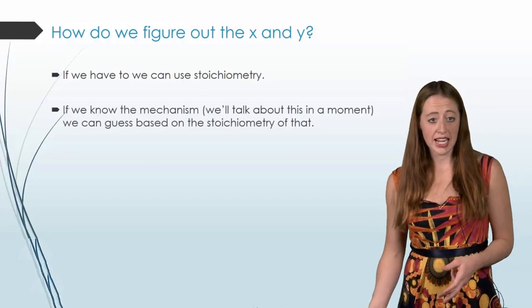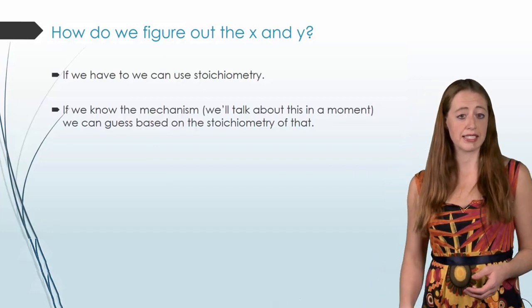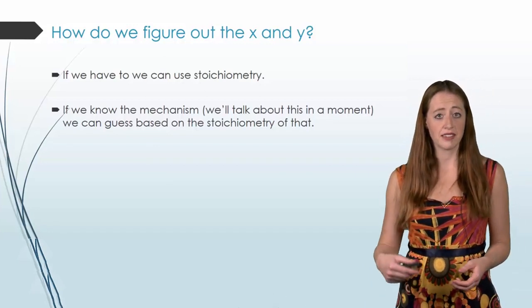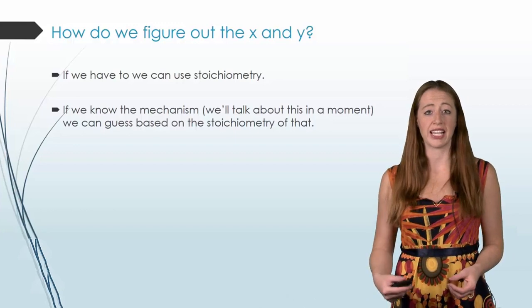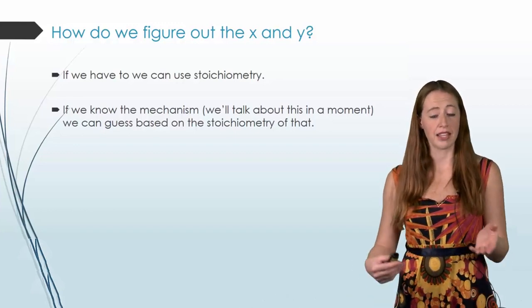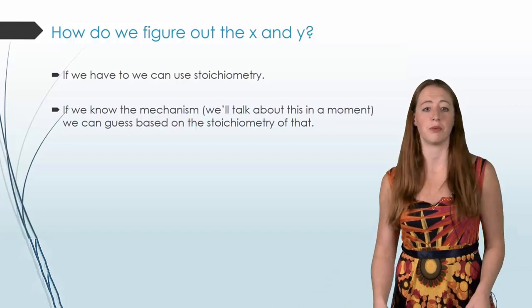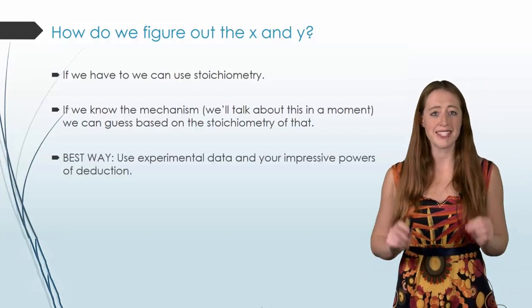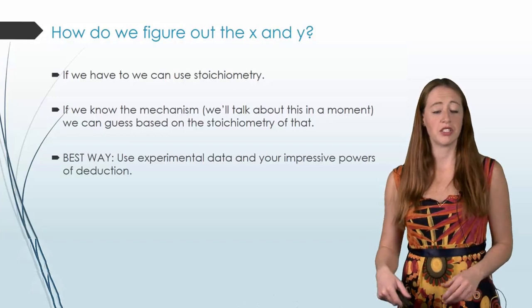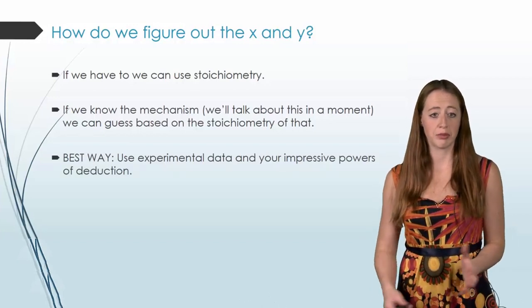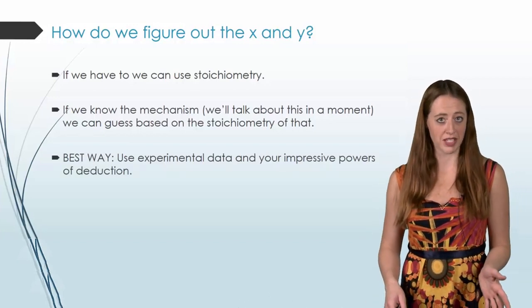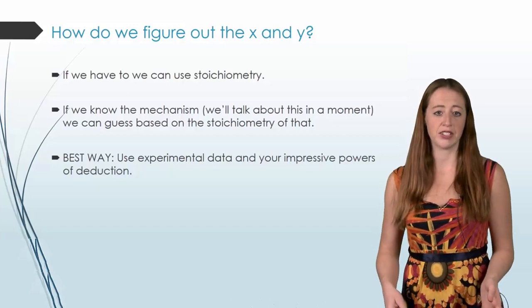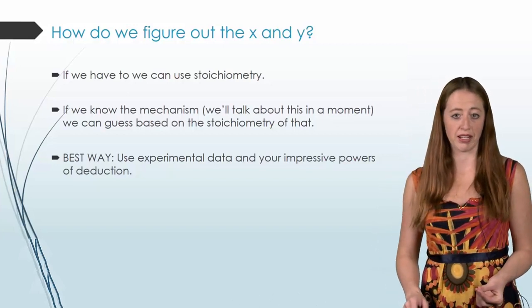What we'll learn next time is that if we know the mechanism, we can guess the rate law based on the stoichiometry of the mechanism and the rate limiting step and many things that we'll cover. That too has problems. So the absolute best way to do it is going to be to use experimental data and your impressive powers of deduction and some problem solving that I'll teach you how to do to figure out the actual 100% rate law.